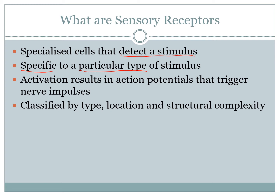Each type of receptor we'll talk about all results in an action potential, and it's that action potential that triggers a nerve impulse. The nerve impulse is what triggers your actual neural response, travelling from your sensory neuron right through to your central nervous system in order to elicit some form of response.